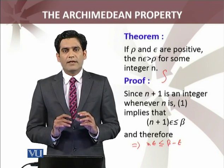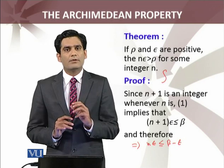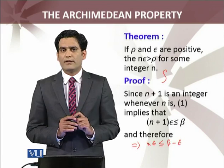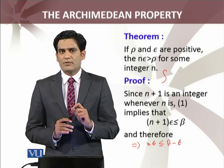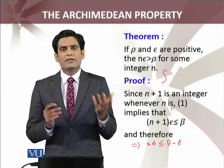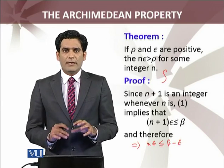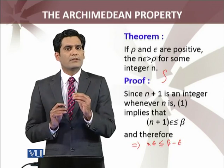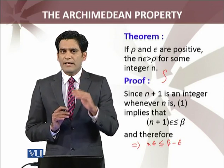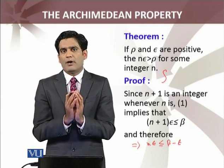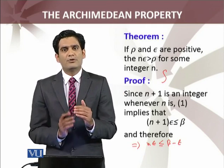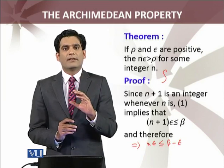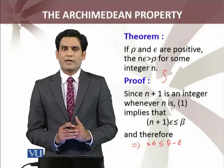What does it mean? It means that β − ε is an upper bound of set S. अब β − ε और β में से छोटा number β − ε होगा क्योंकि ε is greater than 0. By definition, हम पहुंचे हैं कि n·ε ≤ β − ε for all n — यह show कर रहा है कि β − ε एक upper bound है set S की. But β was the least upper bound — सब upper bounds में से सबसे छोटी upper bound. यह contradiction आ गई. इसका मतलब है जो हमने suppose किया था वो गलत था — जो Archimedean property की negation थी. It means the Archimedean property for the set of real numbers is true, and we have proved it.